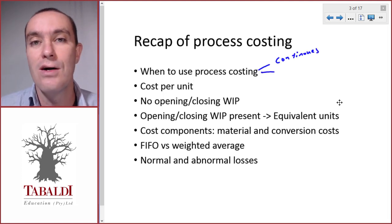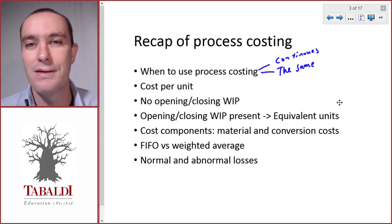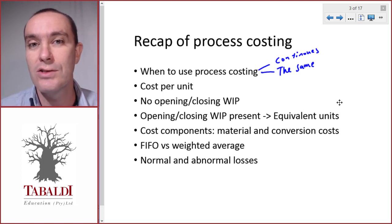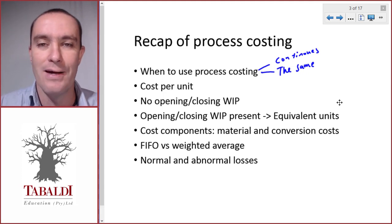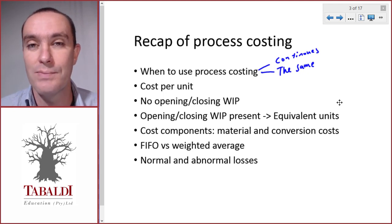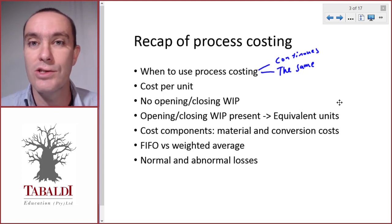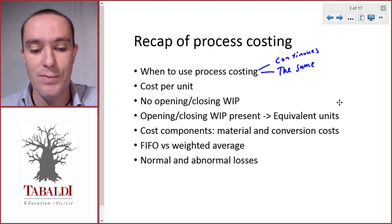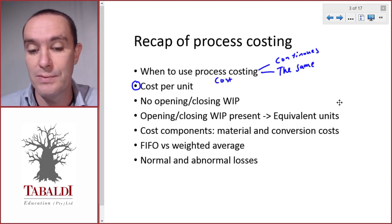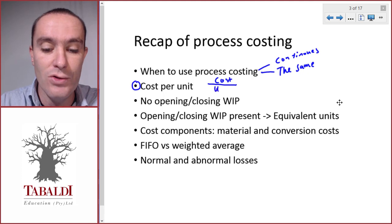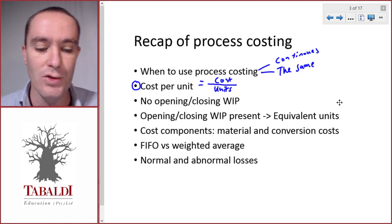The products are homogenous, or the same. If you think of something like baked beans, it won't make sense to cost each individual can every time we produce one. Since we produce thousands of cans in a specific production batch, we would rather allocate all the costs to that specific batch and then divide by the number of units. That is basically what process costing does — we take costs for a specific period and a specific process, divided by the units we produced.